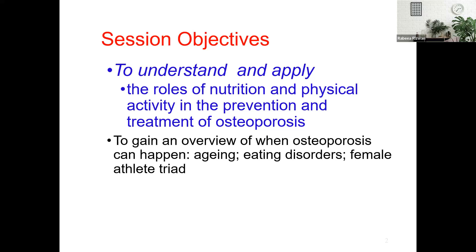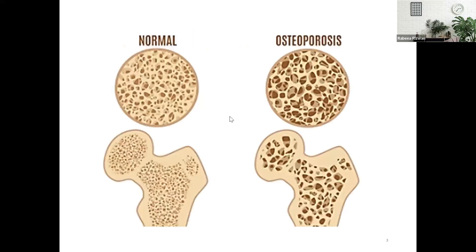The second objective is to gain an overview of when osteoporosis can happen — in aging, eating disorders, and the female athlete triad. First, let's discuss what the word osteoporosis actually means. 'Osteo' means bones and 'porosis' means pores, so the meaning of this word is an increase in the pores inside the bone. This is called osteoporosis. When we look at a normal bone structure under a microscope, it does not have so many large pores.